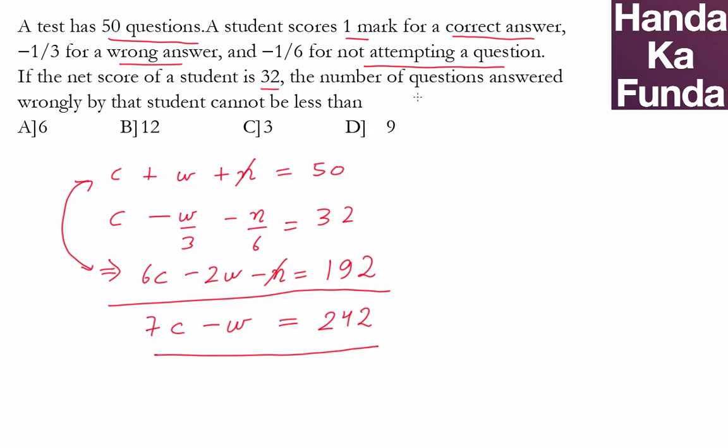Now the question is asking the number of questions answered wrongly by that student cannot be less than. So what is the minimum number of questions that he answered wrongly? When will that happen? Well, when this 7c part goes just above 242.